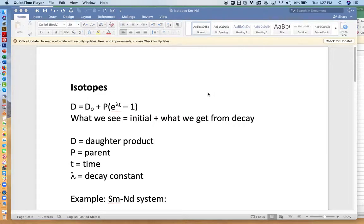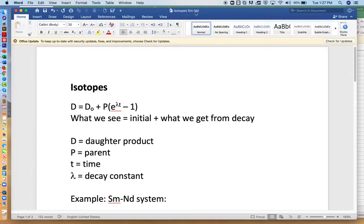Hello, everybody. So in this new assignment on isotopes, we're going to look at a different system. Earlier, we looked at Rubidium strontium. Now we're in this sheet, isotopes, Samarium neodymium.